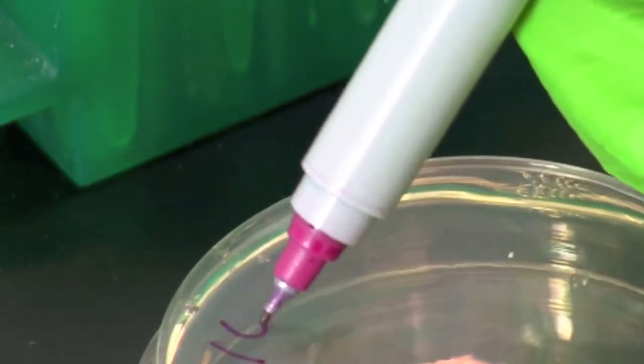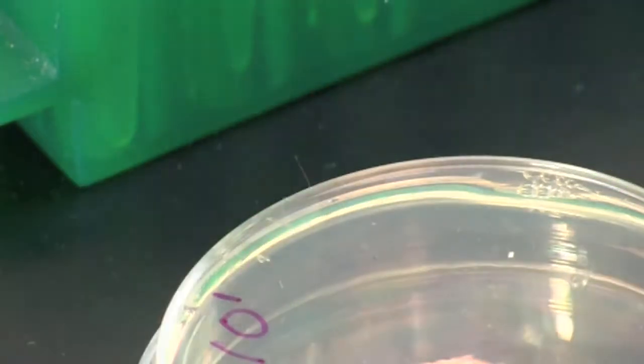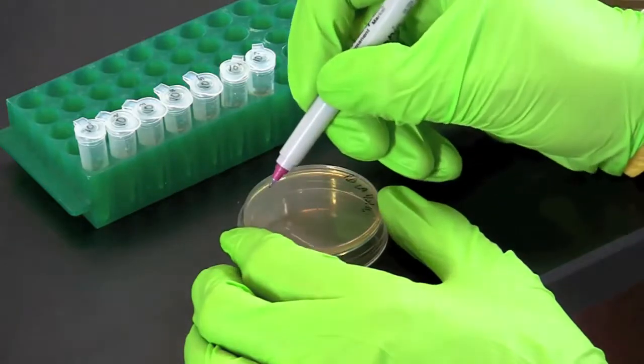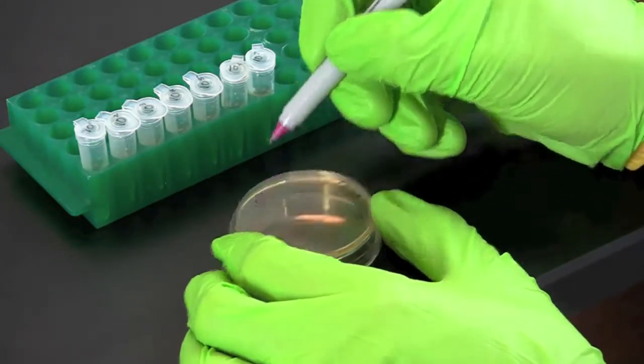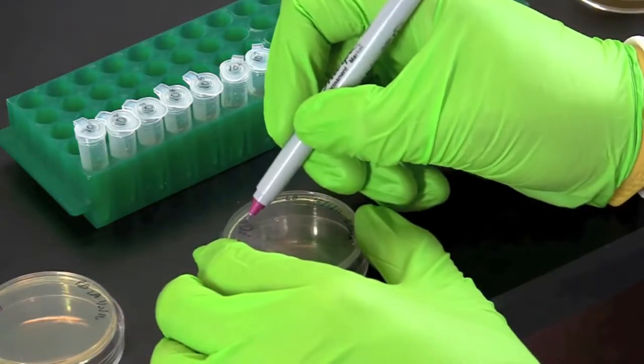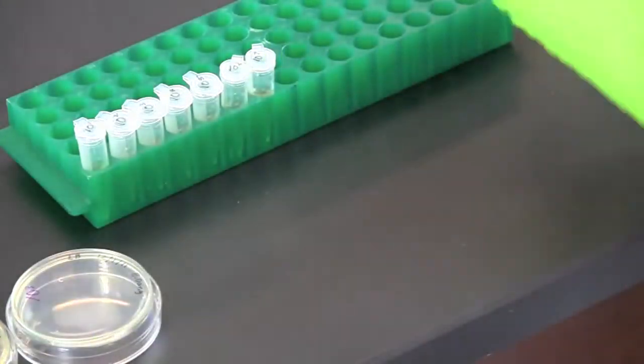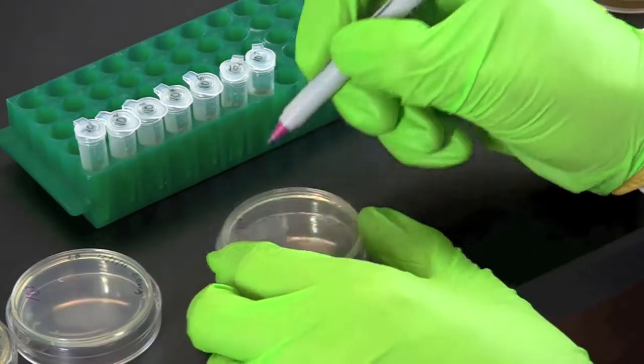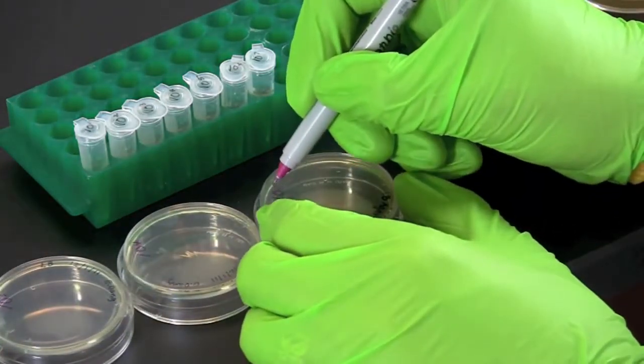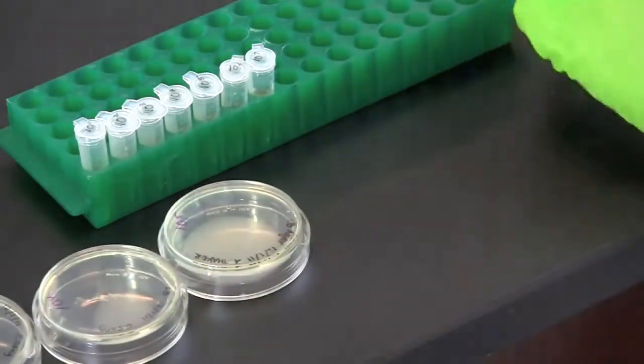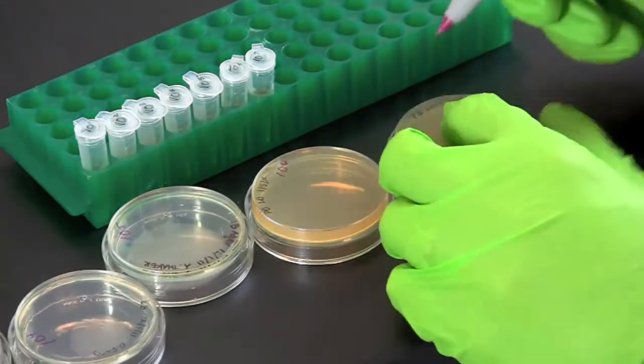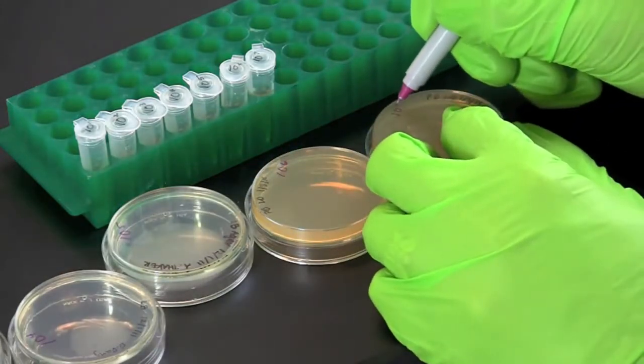Next, label seven LB agar plates on the bottom edge with the dilution factors 10 to the first, 10 to the second, 10 to the third, 10 to the fourth, 10 to the fifth, 10 to the sixth, and 10 to the seventh.